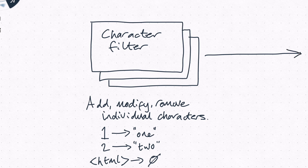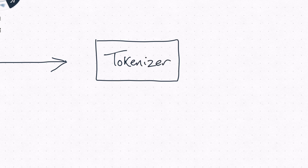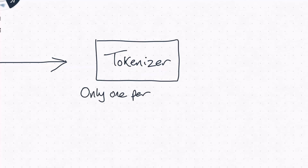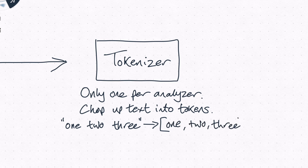Once all character filters have completed their work, or there aren't any character filters in the analyzer, the resulting or original text is sent to the tokenizer. The tokenizer splits up text into individual tokens. You must have exactly one tokenizer in the analyzer. The text is usually, but not always, split on word boundaries like spaces, full stops, and other punctuation. Another very important role of the tokenizer is to record the position of each token in the original text, such as the start and end offsets. This data is used for some query types, as well as highlighting the search criteria in hits.